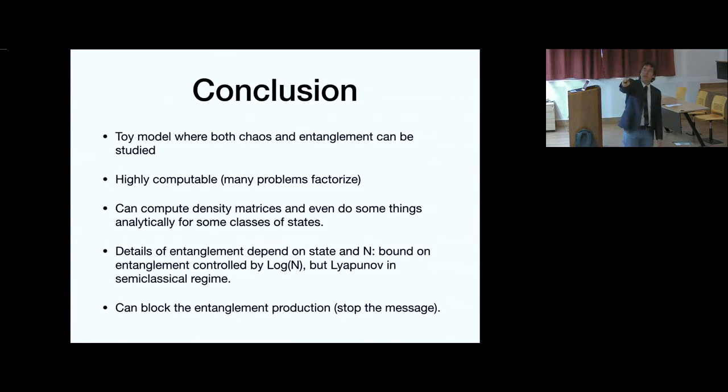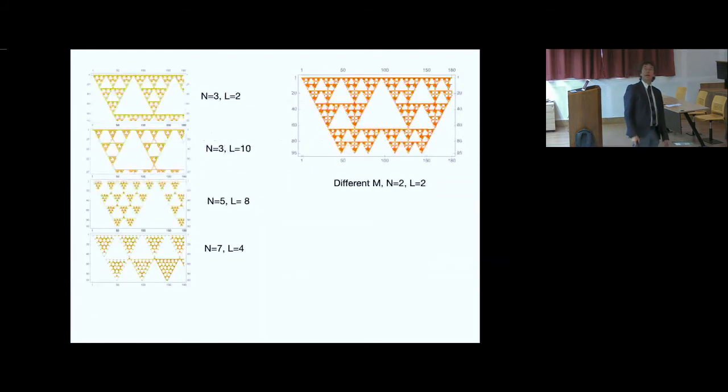So the conclusion is there's this toy model where both chaos and entanglement can be studied semi-analytically. For more general states that are more exotic, one has to resort to some sort of simulation. But this is highly computable for VEVs problems because they factorize and can compute density matrices and even do some things analytically for some class of states. But if I take something that's not quite P basis over here or P ground state over here and not quite Q ground state over here, how these two will talk to each other and how much they're going to basically stop each other from entangling is something that presumably will need numerics. The details of how much you entangle depend on state and n. There's a bound on entanglement controlled by log n, but it's like exponents in the semi-classical regime. You can block the entanglement production.